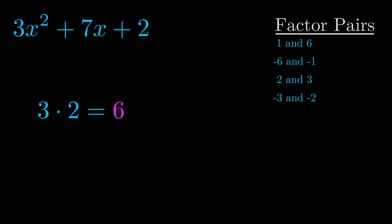The b value is the coefficient on the x term. That's the middle term, the one that we haven't done anything with yet. And really this is the only factor pair that we need.